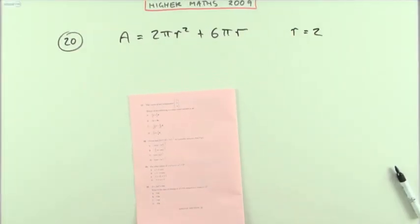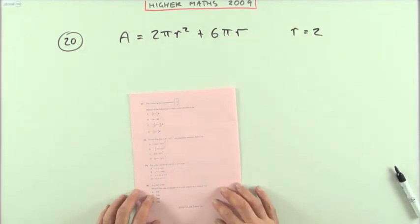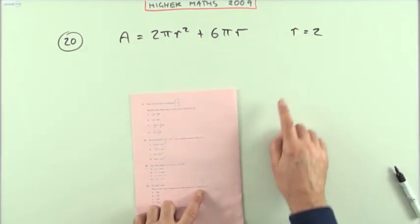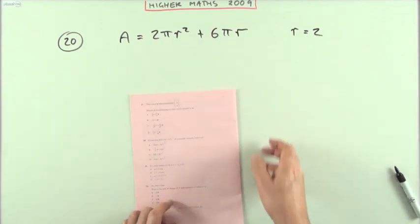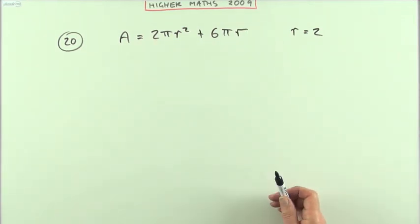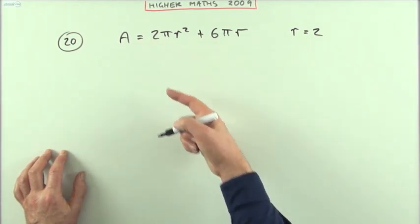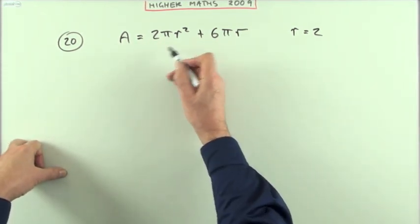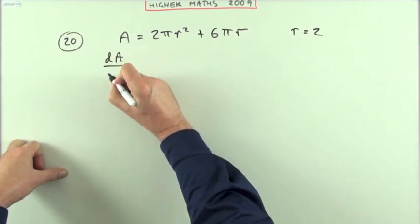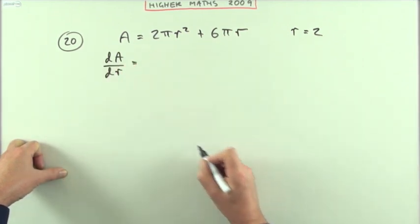Number 20, the last one then, in this 2009 higher exam. What's the rate of change of this when r is 2? Rate of change of A with respect to r. That's an easy question for the last one. Just don't let these A's and r's and π's put you off. It's just like y equals so many x. Rate of change, that's the derivative.